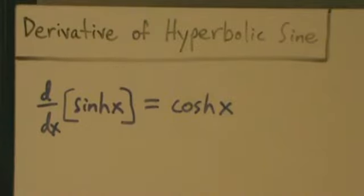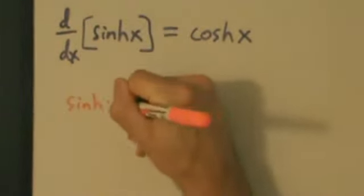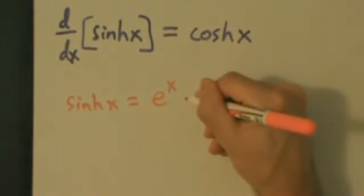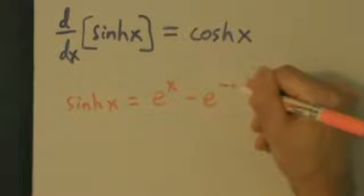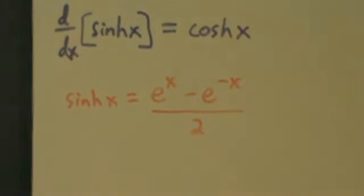So remember from precalculus, or I guess trig, or whatever, the hyperbolic sine of x is defined to be e to the x minus e to the negative x all over 2. So that's what the hyperbolic sine of x is.